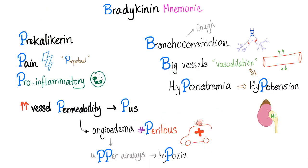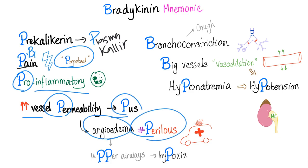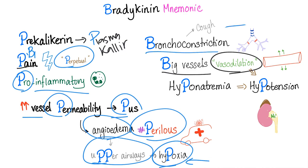Here is the great bradykinin mnemonic. Bradykinin comes from pre-kallikrein being converted into plasma kallikrein. It produces chronic, perpetual pain through the B1 receptor. Bradykinin is strongly pro-inflammatory — it increases vessel permeability leading to pus and angioedema, which is perilous and high risk. Angioedema of the upper airway can kill by hypoxia. Bradykinin leads to bronchoconstriction, vasodilation of large vessels, hyponatremia, and hypotension.